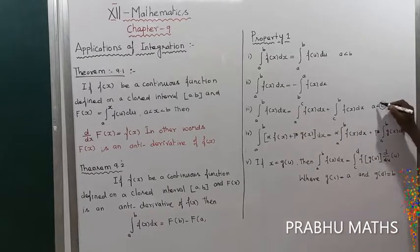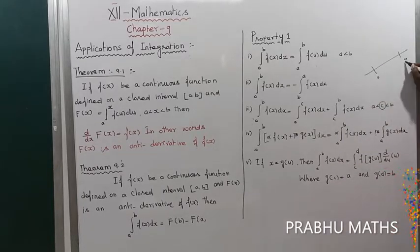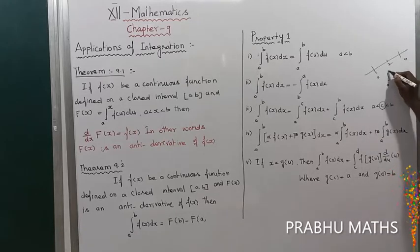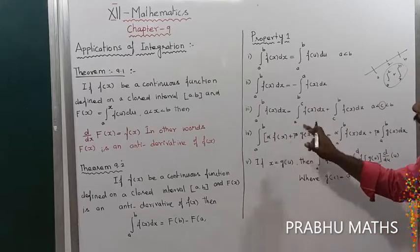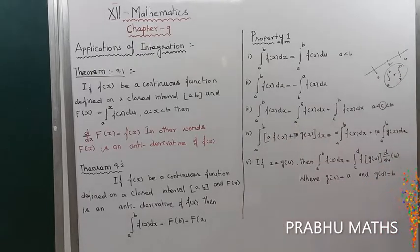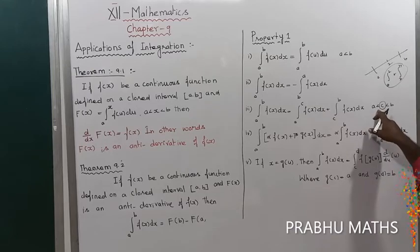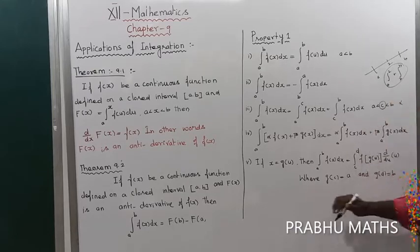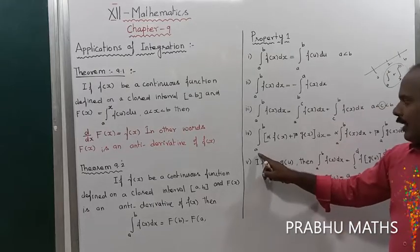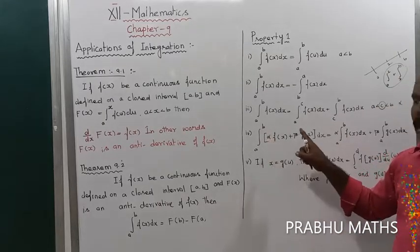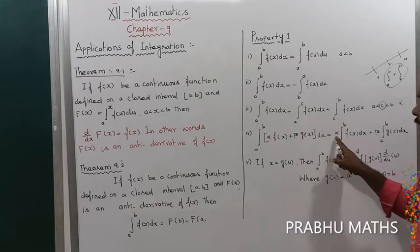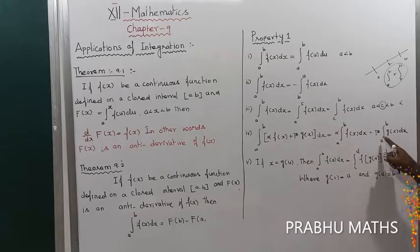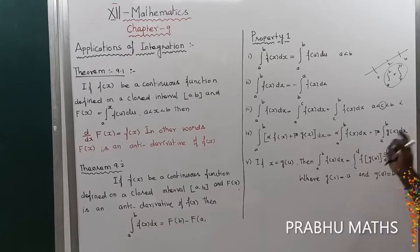Property three: the integral from a to b of f of x dx can be split at an intermediate value c, where a < c < b. So integral a to b equals integral a to c of f of x dx plus integral c to b of f of x dx. Property four: the integral from a to b of [alpha·f(x) + beta·g(x)] dx equals alpha times integral a to b of f of x dx plus beta times integral a to b of g of x dx. Constants can be taken outside the integral.